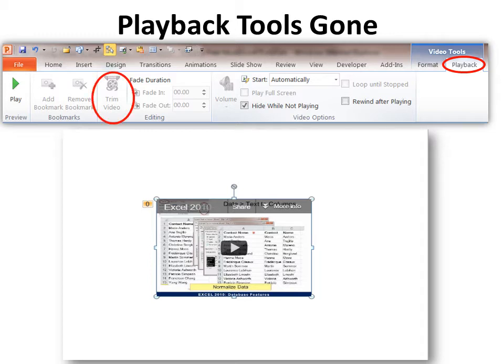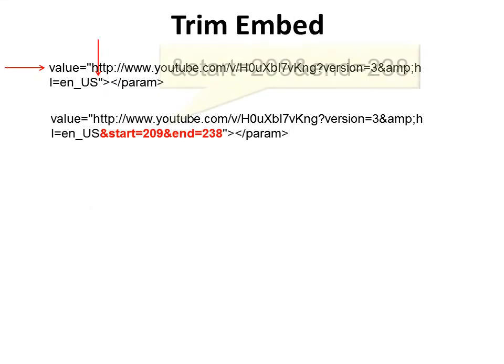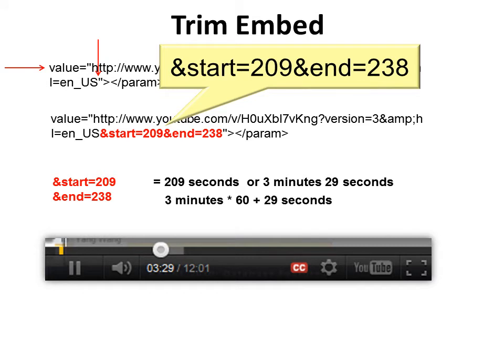So what can you do if you want to trim the video? To edit the code, look for the word 'value.' Notice it has a quotation mark, and just before the second set of quotation marks is where you insert your cursor to make changes. To trim: if you want it to start at 3 minutes and 29 seconds, add '&start=209' because 209 seconds equals 3 minutes times 60 plus 29 seconds. Then add '&end=238' to set the ending point, so it plays for just those few seconds.